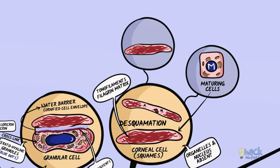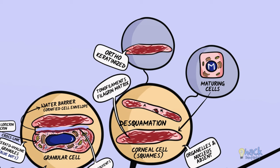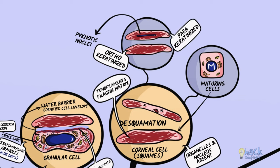When the cells in the corneal layer have lost their organelles and nuclei, the stratified epithelium is referred to as orthokeratinized epithelium. However, there are parts of the gingiva or palate where the corneal layers have not lost all organelles and possess pyknotic nuclei, and this pattern of maturation is called parakeratinization.